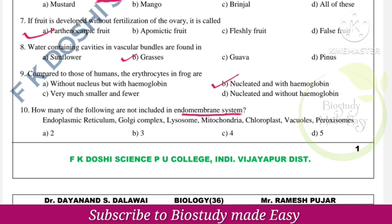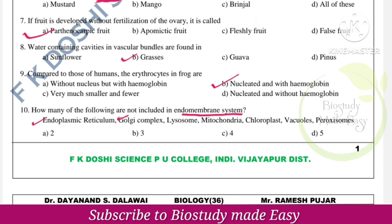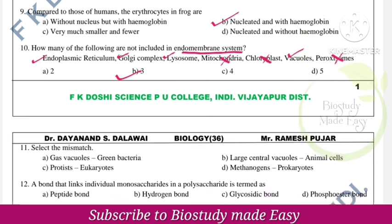The endomembrane system includes endoplasmic reticulum, Golgi complex, vacuoles, and lysosomes. What is NOT included: mitochondria, chloroplast, and peroxisomes. So the right option is option 3 — three organelles are not included.